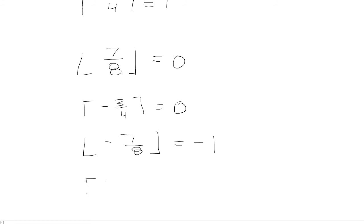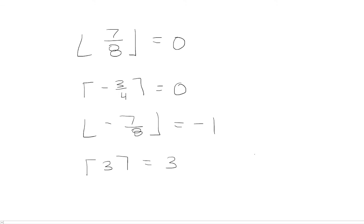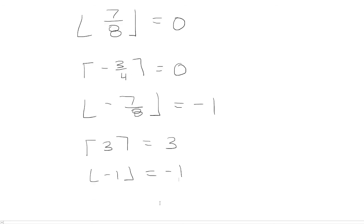What happens if you have the ceiling of 3? Whether you take the ceiling or the floor function of a whole number, it's just going to be itself. Similarly, if you looked at the floor of negative 1, because it's a whole number, it's just going to be negative 1 itself.